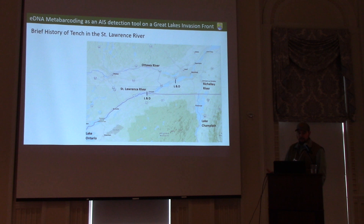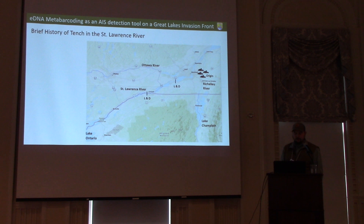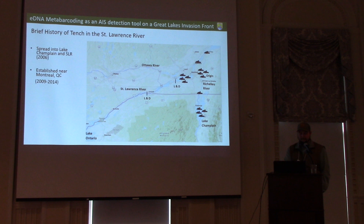The map shows Lake Ontario to the west, Lake Champlain to the southeast, and the St. Lawrence River, Ottawa River, and Richelieu River. There are also two locking dams along the system. That 1986 illegal fish farm in Quebec was the origin. Fish moved both down to Champlain and were first detected in the main stem of the St. Lawrence River in 2006. From 2009 to 2014, they continued to move upstream along the main stem and really started to establish in the Montreal area.